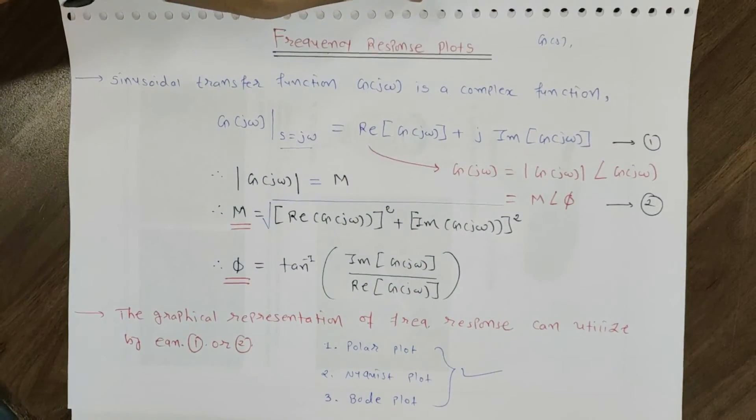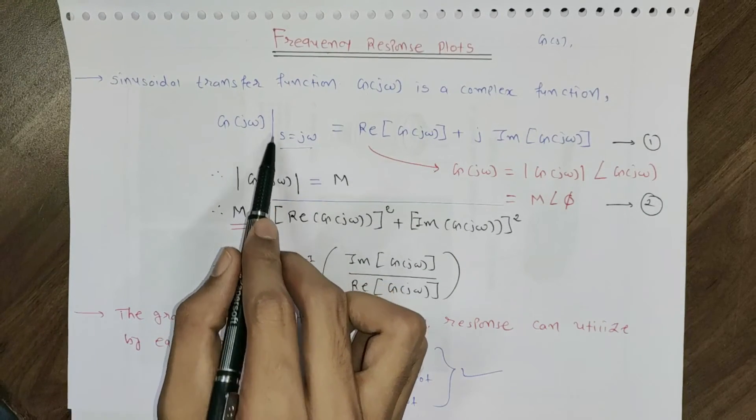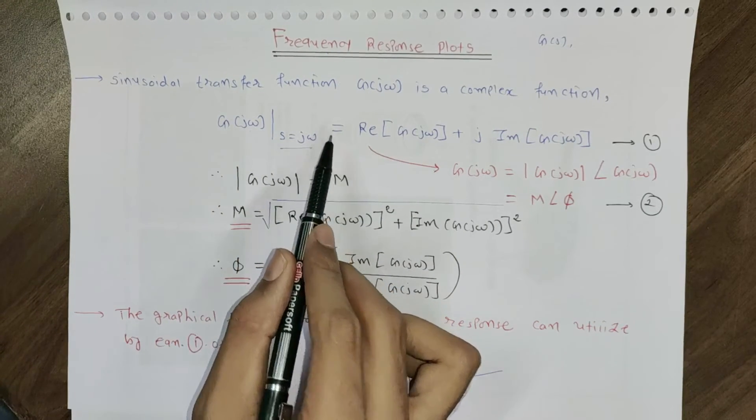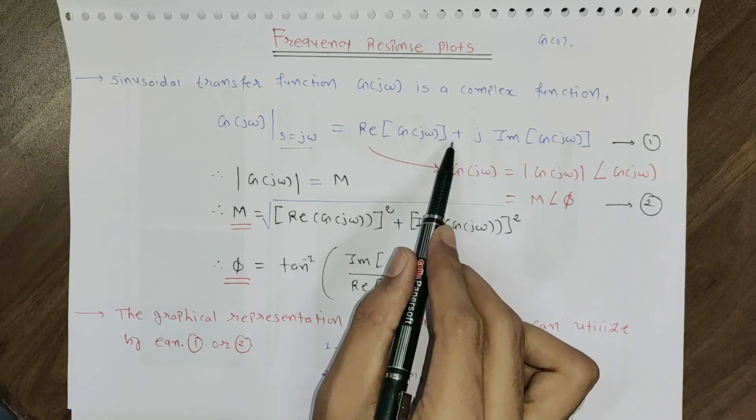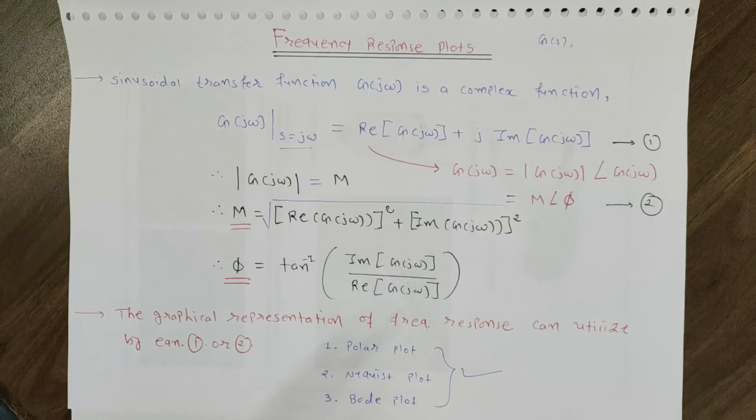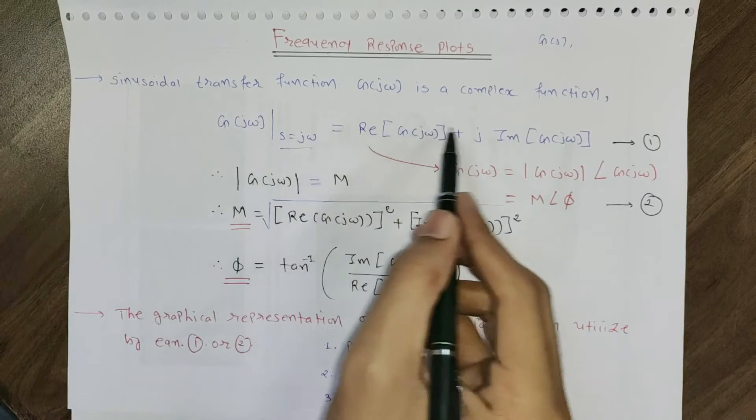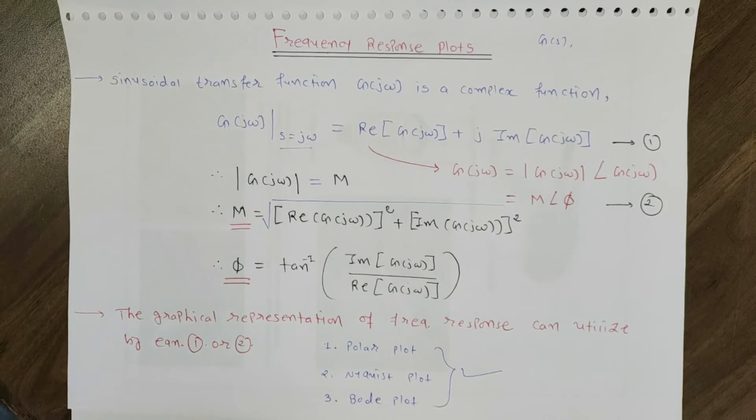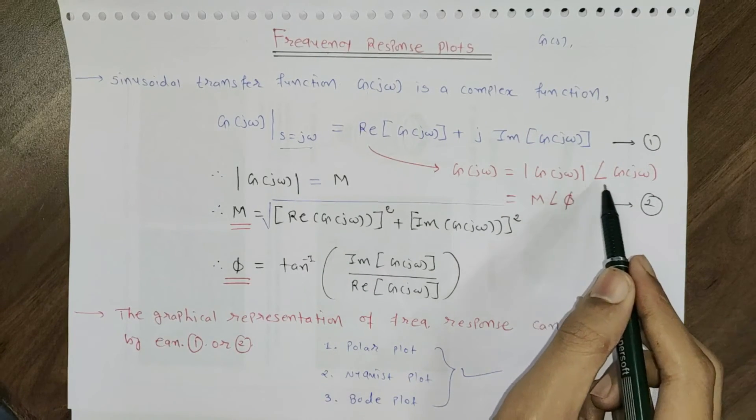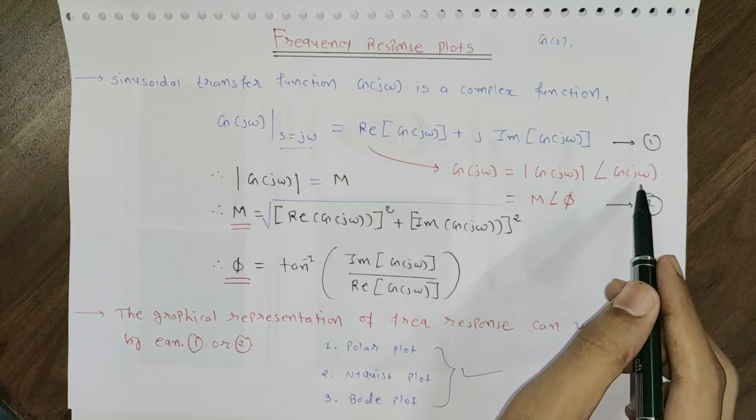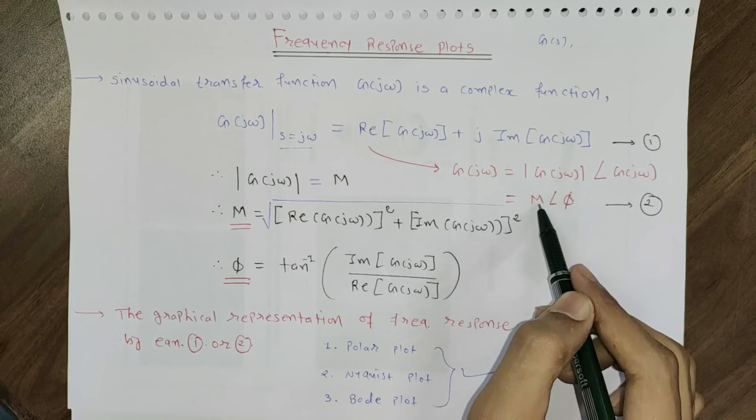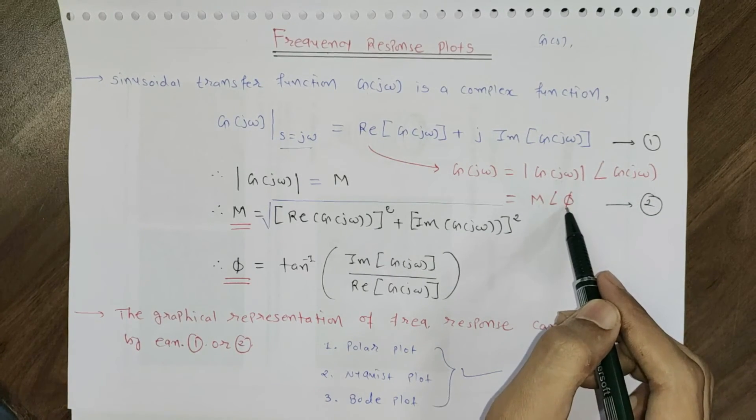A sinusoidal transfer function, if G of S is there and you replace S equals J omega, you can represent G of J omega as the real part of G J omega plus imaginary part of G J omega. If I am interested to find the magnitude and phase angle, I can simplify that as magnitude of G J omega at angle G J omega. Let's say this magnitude is M and angle is phi.